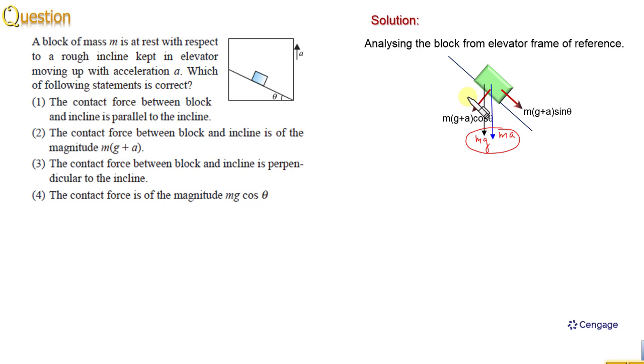Normal reaction will act on the object perpendicular to the surface toward the object that is N and friction force will be static in nature, will act opposite to the sliding tendency in upward direction. This is the friction force, small f. And this block is at rest with respect to the inclined plane.